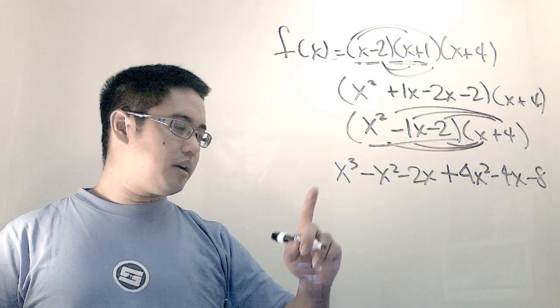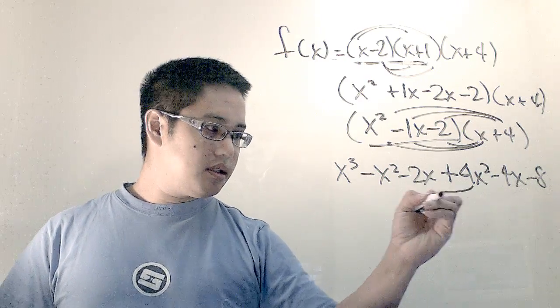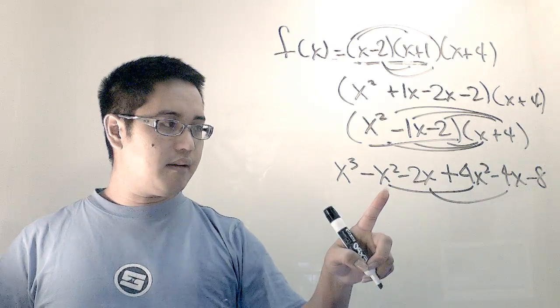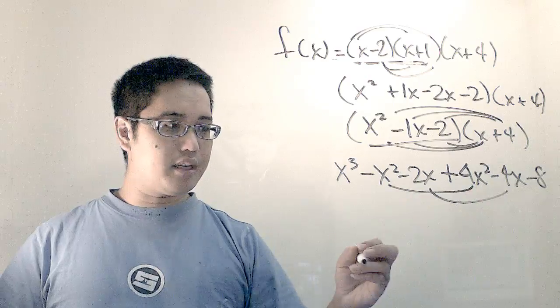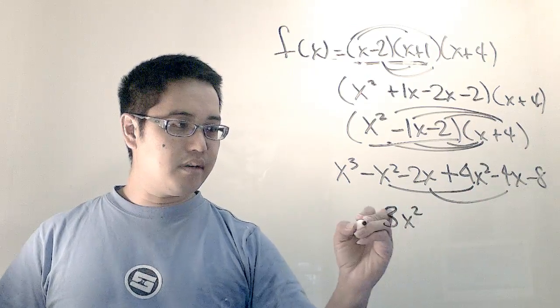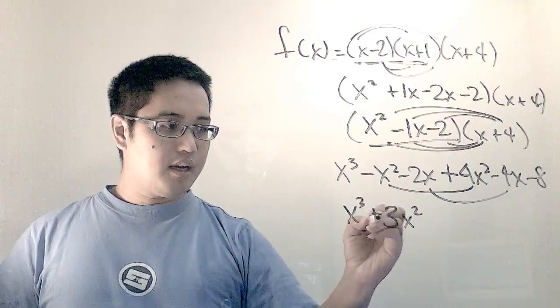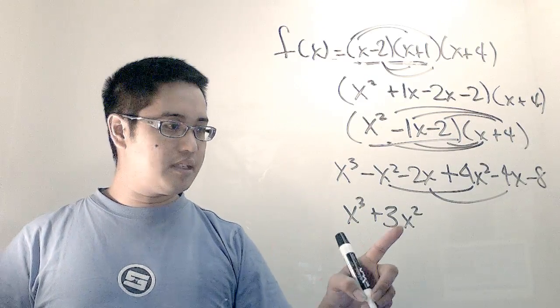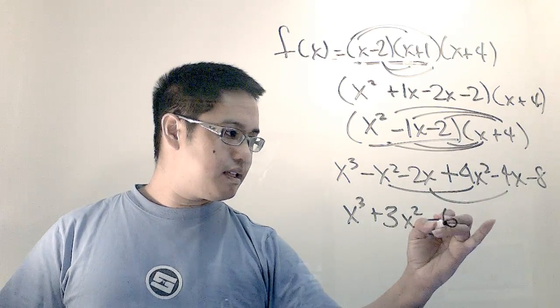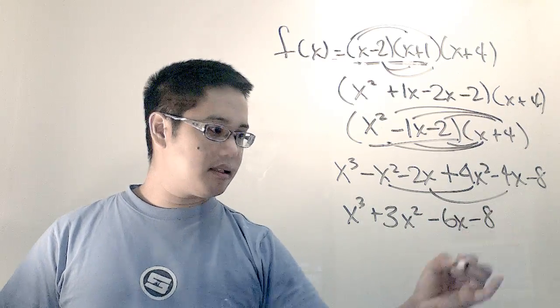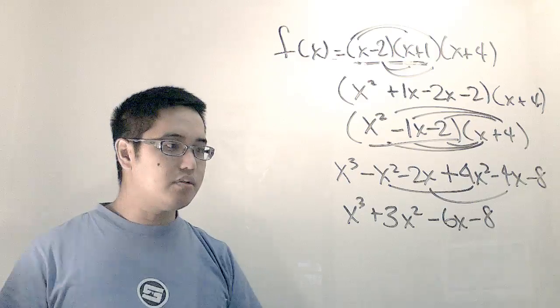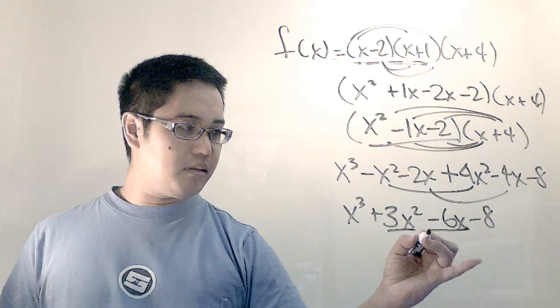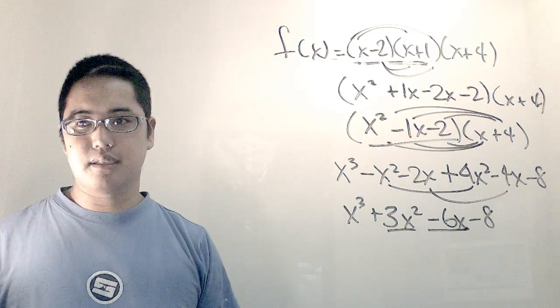Now, I'm going to combine like terms again. These two are alike, and these two are alike. This is a negative x squared. This is a positive 4x squared. So, that leaves you with 3x squared. I still have my x cubed because that's not alike with anything else. I've got x cubed, 3x squared, and then I have negative 6x minus 8. So, I told you that it was going to have an x cubed, there was probably going to be a number as x squared term, and there's probably going to be an 8. Negative 8.